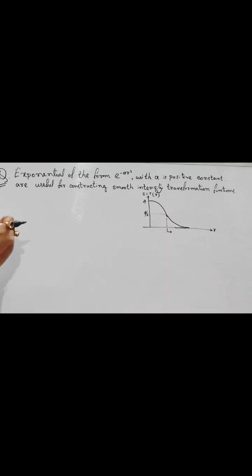General form: S equals to T of R equals to C into e to the power minus K R square. Here, K and C are constants.